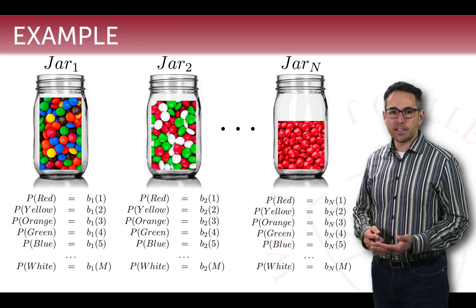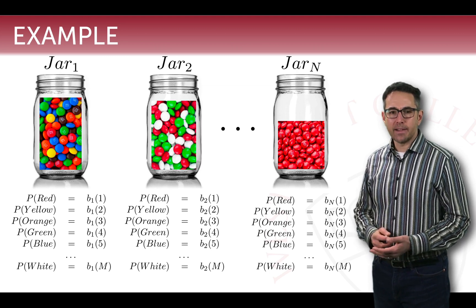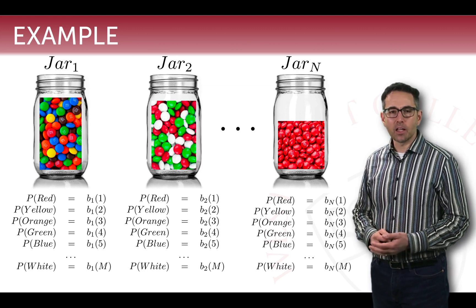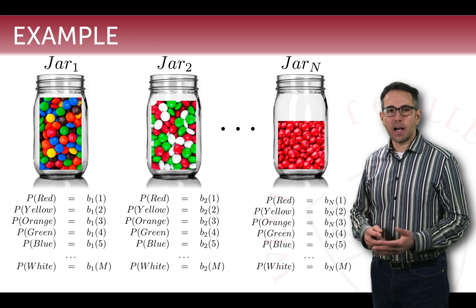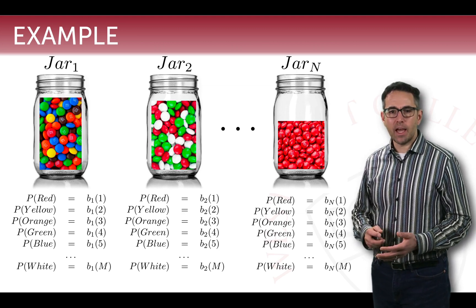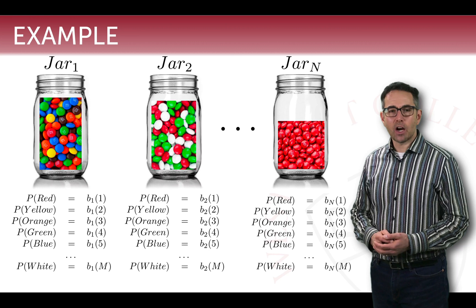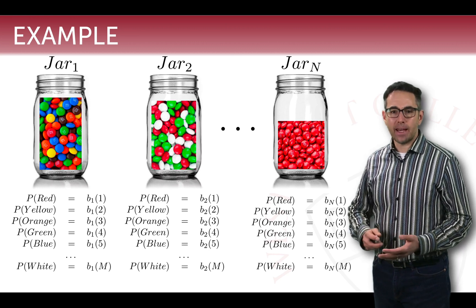For example, in this diagram, jar one has a normal distribution of M&Ms, a variety of different colors. Jar two has a holiday assortment of M&Ms, red, green, and white. And jar N has just red M&Ms.